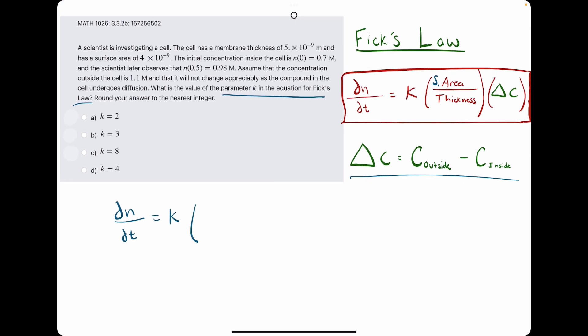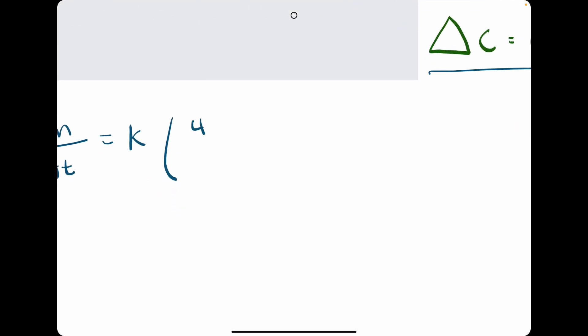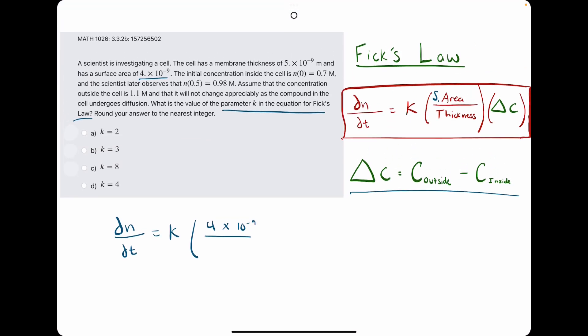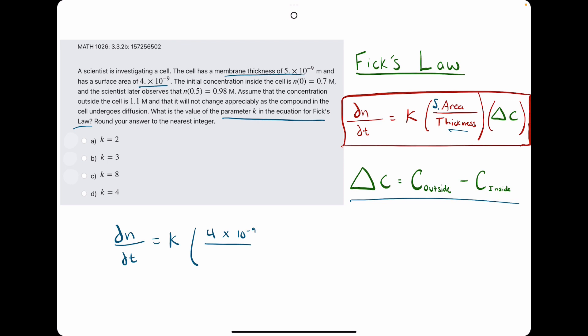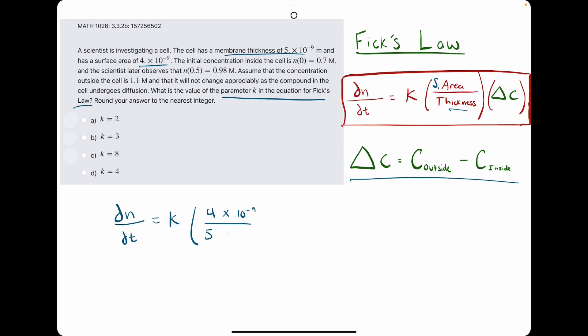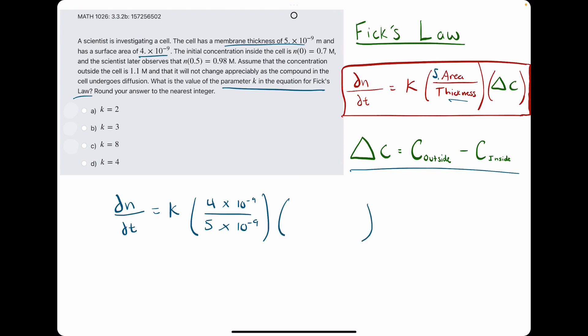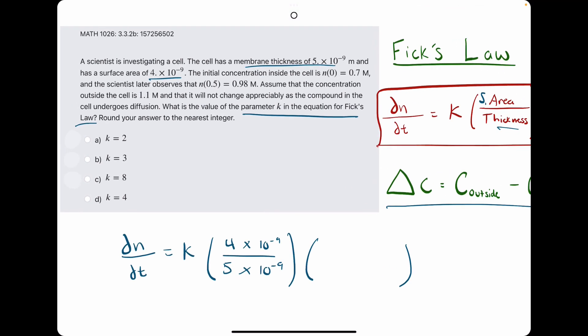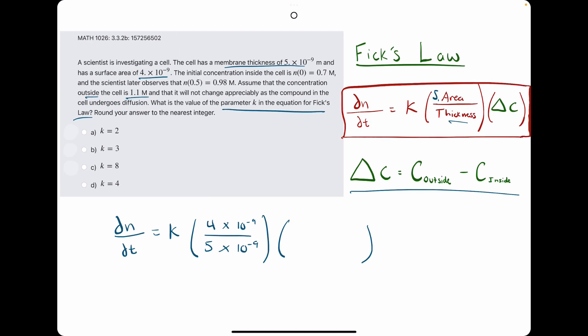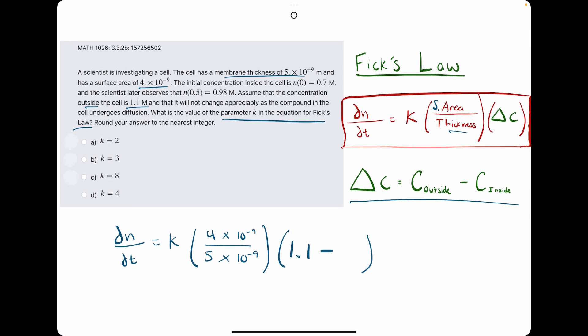K we do not know. That's what we are eventually looking for. Surface area is given as 4 times 10 to the negative 9. And the thickness is the membrane thickness, the cell membrane thickness. So we have 5 times 10 to the negative 9. And now the delta c, the change in concentration from outside to inside. They say that the concentration outside the cell is 1.1. So 1.1 is our concentration outside.